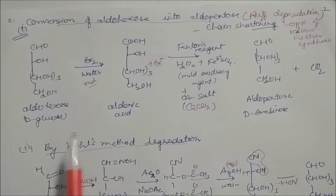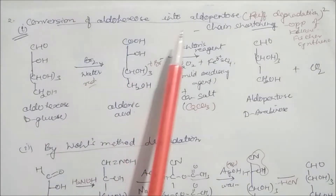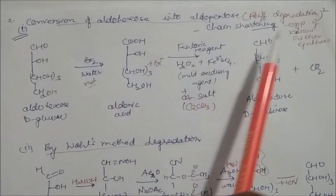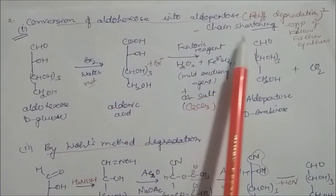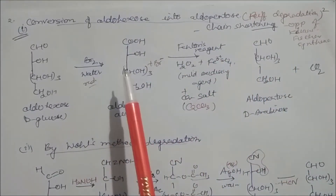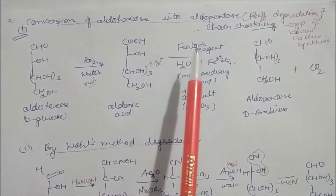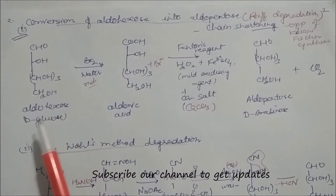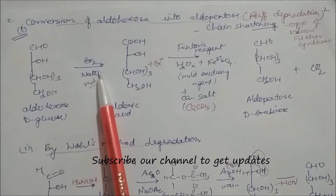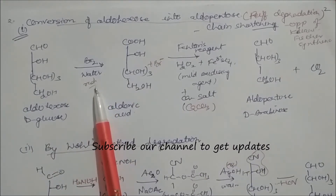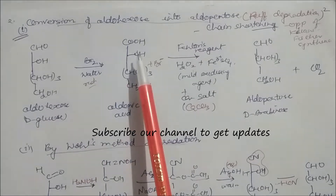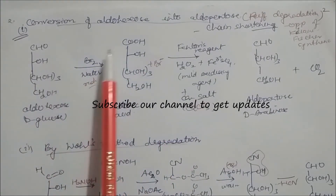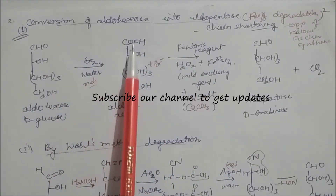Now we look at conversion of aldohexose to aldopentose — the reverse, called Ruff degradation or chain shortening. Starting from D-glucose, treatment with bromine water oxidizes the aldehyde CHO group to a carboxylic acid, giving aldonic acid (gluconic acid). Bromine water acts as a mild oxidizing agent and decolorizes in this reaction.